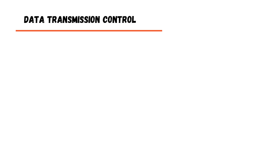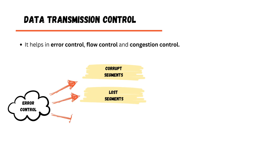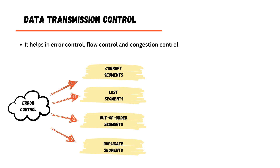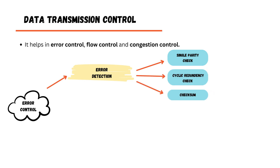The fourth functionality is data transmission control, which handles error control, flow control, and congestion control. Error control deals with corrupted segments, lost segments, out-of-order segments, and duplicate segments — anything that can go wrong during transmission. The three error control mechanisms used at the transport layer are: error detection techniques (including single parity check, cyclic redundancy check, and checksum), sequencing and acknowledgements, and retransmission of segments.